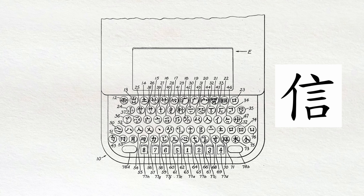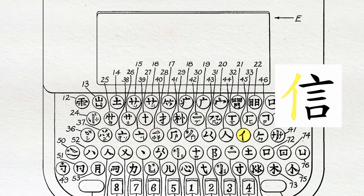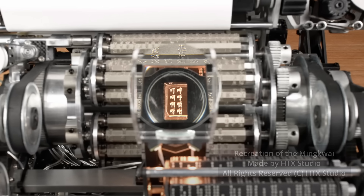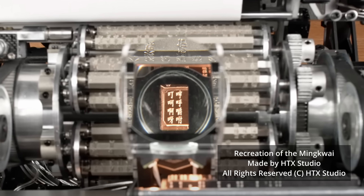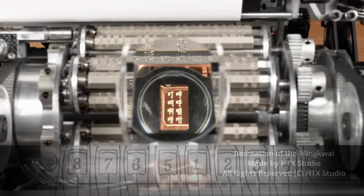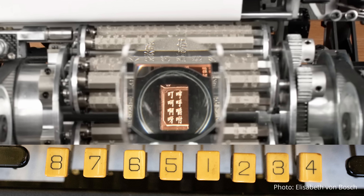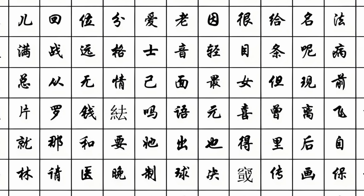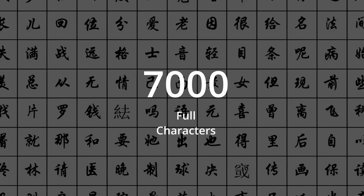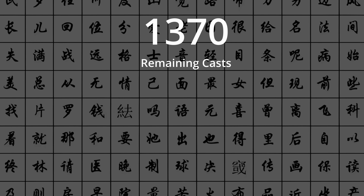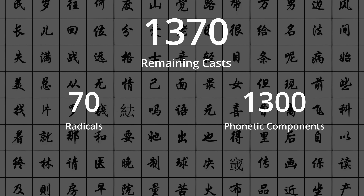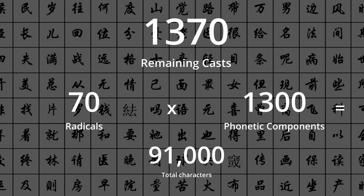The absolutely ingenious part of this machine is the selection process. For example, if you want to type the character xin, you'd first tap the top part — the renzi pang — and then type the bottom part — the kou. The cylinders in the device turn to find characters matching both components. A viewfinder called the 'magic eye' lights up on top of the machine, showing eight possible options. From there, eight buttons on the bottom of the keypad let you strike the number of the character you want. Out of the over 8,000 characters in the cylinders, about 7,000 are full characters. Of the remaining 1,370 casts, 1,300 are phonetic components and 70 are radicals — meaning a total of 91,000 additional characters can be made from this machine.